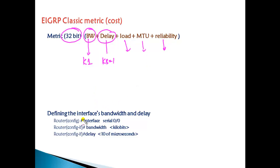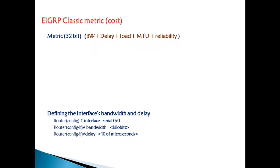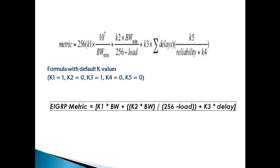If you want to change the bandwidth or delay, you can go to that particular interface and change the bandwidth. The delay has to be given in terms of tens of microseconds, which means the minimum delay you can configure — if you give a delay of 1, it will represent tens of microseconds. The bandwidth depends on the link speed. The default metric formula is: EIGRP metric = K1 × bandwidth + (K2 × bandwidth) / (256 − load).